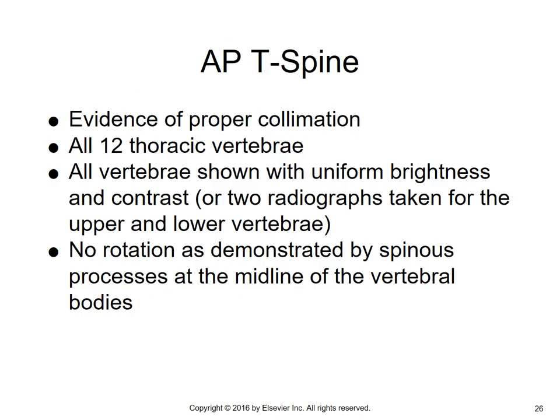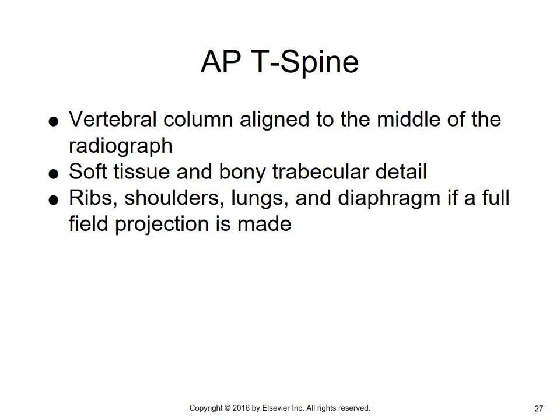For evaluation criteria of the AP T-spine, you need proper collimation, all 12 thoracic vertebrae shown with uniform brightness and contrast — though you may need two radiographs for upper and lower vertebrae with film. With digital imaging today, that is generally not necessary. There should be no rotation, as demonstrated by the spinous processes at the midline of the vertebral bodies. The vertebral column should be aligned to the middle of the radiograph with soft tissue and bony trabecular detail visible, including ribs, shoulders, lungs, and diaphragm if a full-field projection is made.